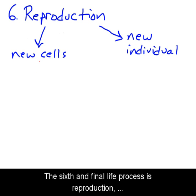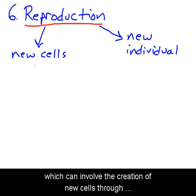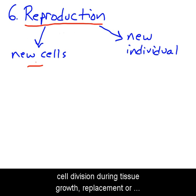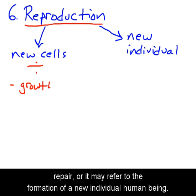The sixth and final life process is reproduction, which can involve the creation of new cells through cell division during tissue growth, replacement, or repair, or it may refer to the formation of a new individual human being.